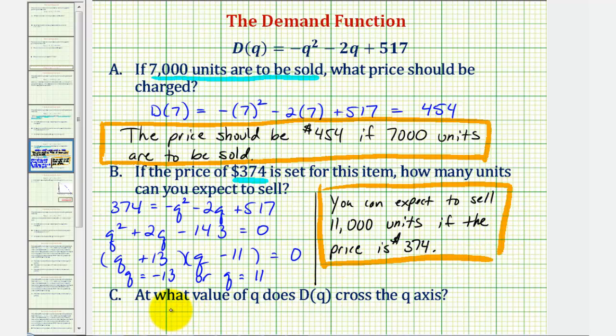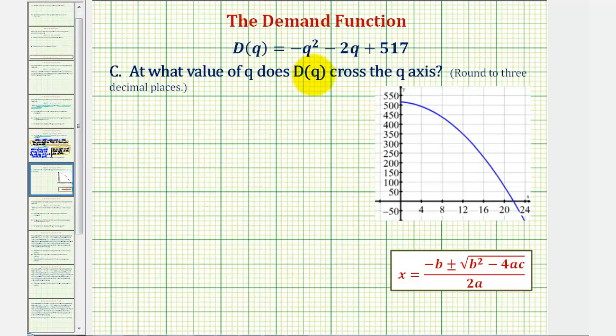For part C, we're asked at what value of Q does D of Q cross the Q axis? Well, D of Q crosses the Q axis or horizontal axis when D of Q equals zero. So to find where D of Q equals zero, we'll substitute zero for D of Q, giving us the equation zero equals negative Q squared minus 2Q plus 517.